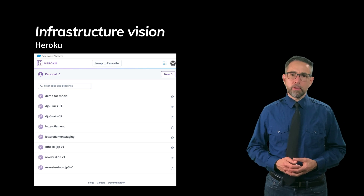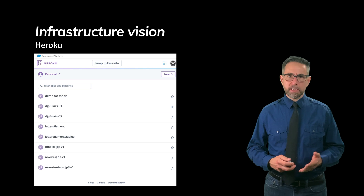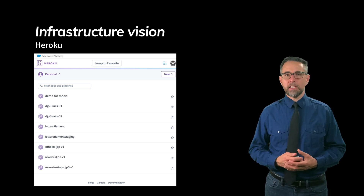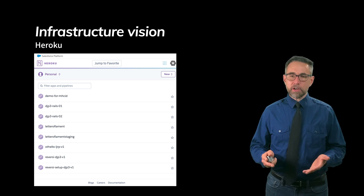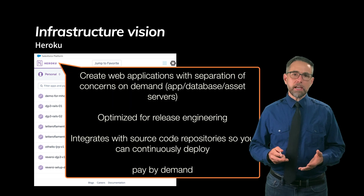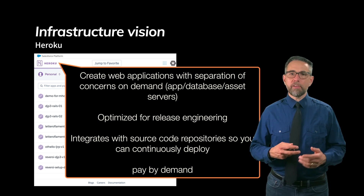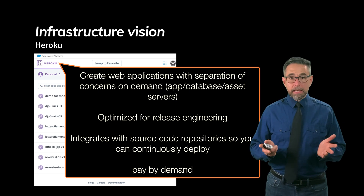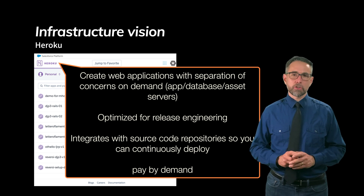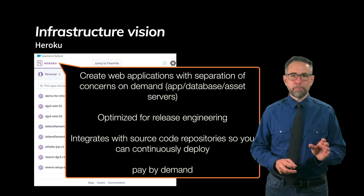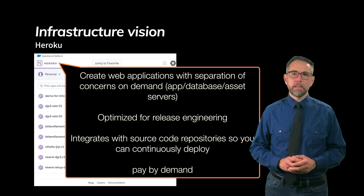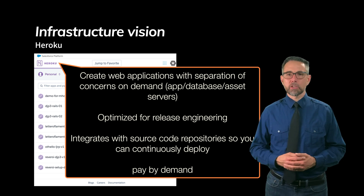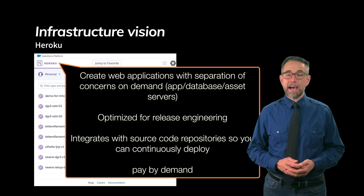Another infrastructure vision is a company like Heroku. Heroku is a company that runs on top of Amazon, takes their infrastructure services, puts them together for you, does some value-added on top, and yet is still providing an infrastructure. That infrastructure is optimized to run web applications — particularly for release engineering, meaning it does a really good job of updating a web application anytime you make small changes so you can get your code out to the world quickly. It enables you to create web applications with separation of concerns — things like the application server, the database server, the asset server — and integrates source code repositories so that you can continuously deploy. Very fast deployment so you can get your code to market quickly. Again, it's pay by demand.